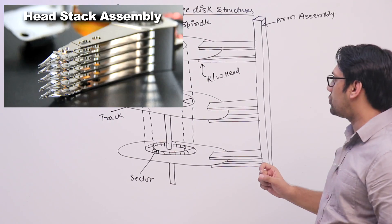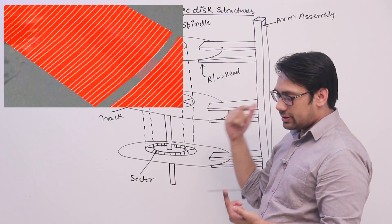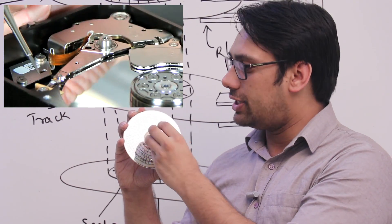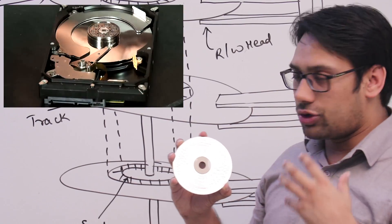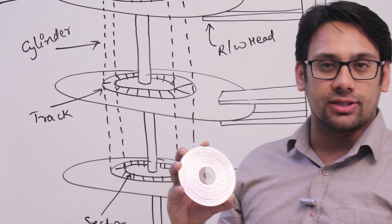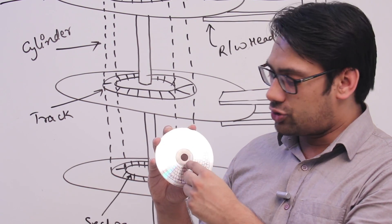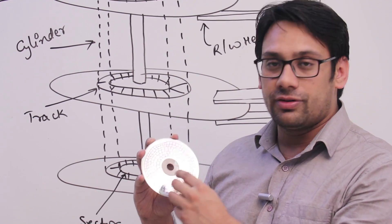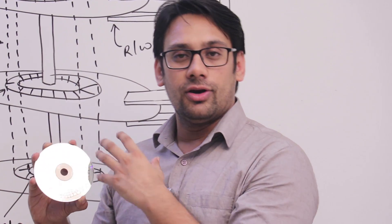Coming back to this, these drives also have tracks — these rotational circles are tracks — and every track is divided into sectors. There are many tracks in a platter and every track is divided into various sectors. The number of sectors in every track is equal. In the hard disk, the innermost track — the one closest to the center — has the highest density of storage. It stores more information because the number of sectors in that inside track is equal to the number of sectors on the outer side.